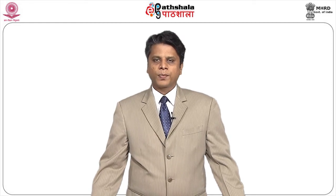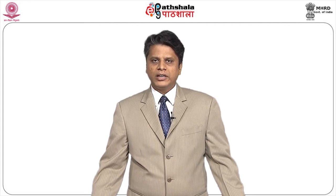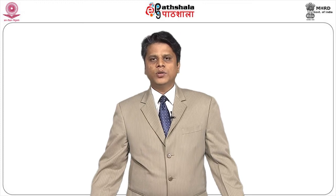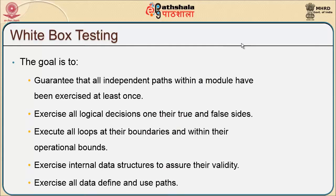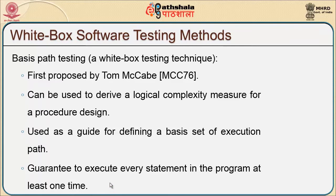Once this testing is done in full, we are trying to assure the quality of the product. Software engineering majorly talks about ensuring better programming, fixing the schedule, fixing the cost, and ensuring a quality product. For ensuring quality, we must execute all loops at their boundaries and within their operational bounds — at least we should have traversed through any loop once. We also try to exercise internal data structures to assure their validity, and finally we define all data and use case paths.